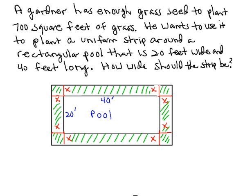Now we know that the number of square feet available for the border is 700 square feet. Let's think about how we might set up an equation to help us find what the value of X is.